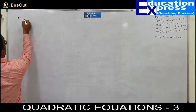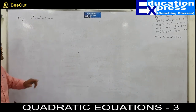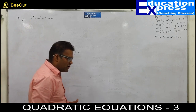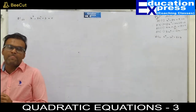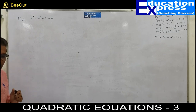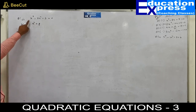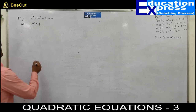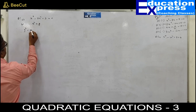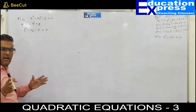Question number 5, part 1: x raised to 4 minus 2x squared minus 3 equals to 0. At first glance, this does not look like a quadratic equation because the degree of the equation is 4. But it can be converted into a quadratic equation by a slight adjustment. We say let x squared equal y. So the equation becomes y squared minus 2y minus 3 equals to 0. This is in standard form and is a quadratic equation with highest degree 2.